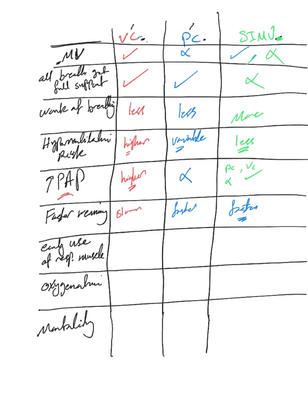Regarding early use of respiratory muscles: in volume control and pressure control, respiratory muscle use is less because every single breath receives full support from the ventilator. In SIMV, only the backup rate receives full support — for the extra breaths, the patient uses their own respiratory muscles because they receive only partial or zero support. Oxygenation should be the same across all modes.